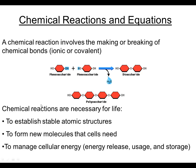What are chemical reactions, or why are chemical reactions necessary for life? There are three primary reasons in biology that we're going to look at chemical reactions. First, we know that they help to establish stable atomic structures. Atoms desire full outer shells, and when reactions occur, many times those stable atomic structures are produced.